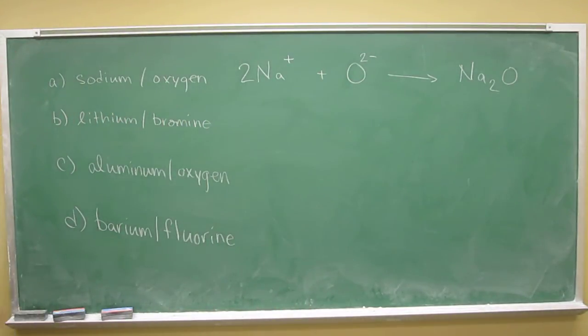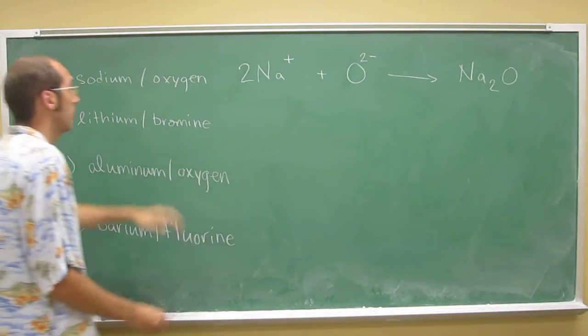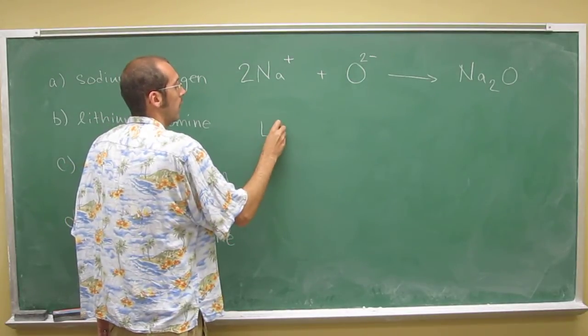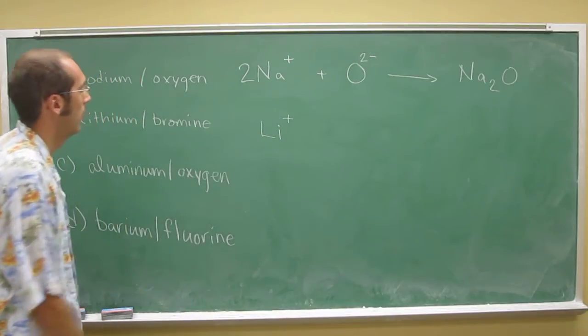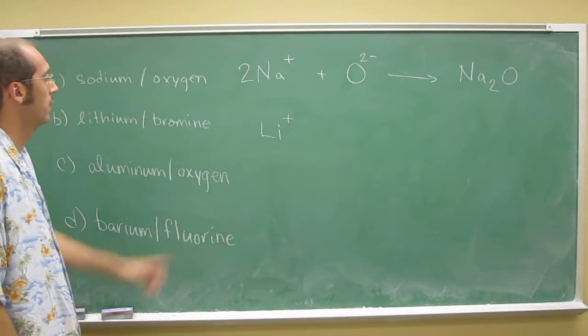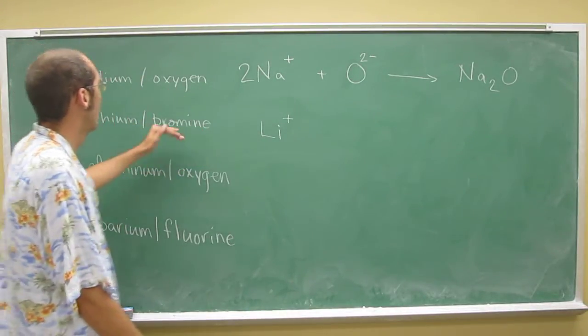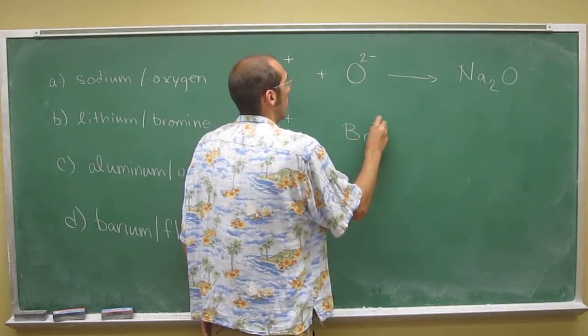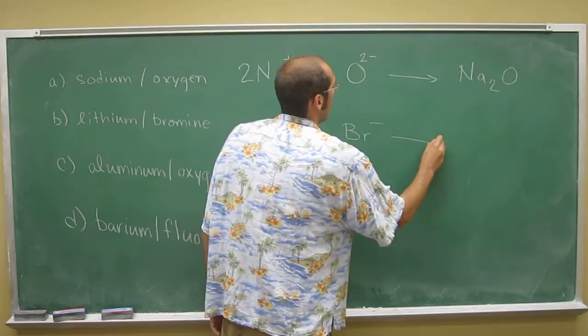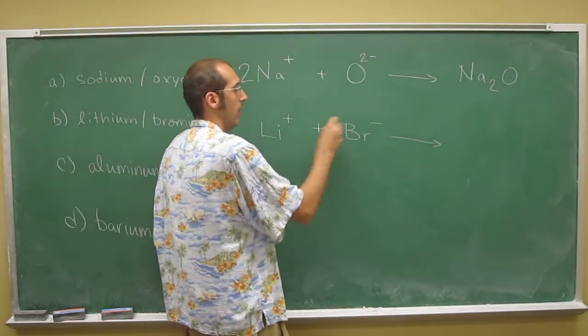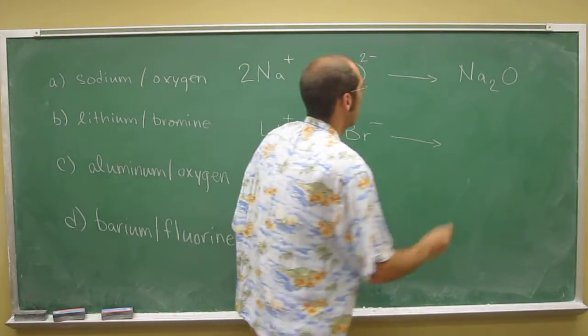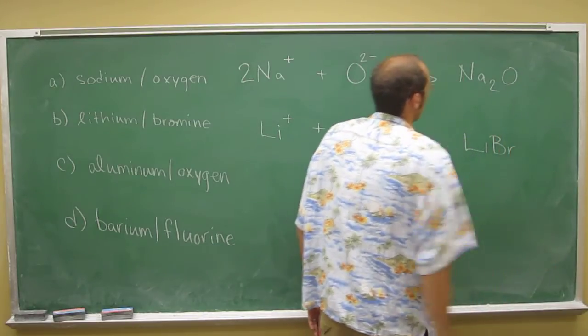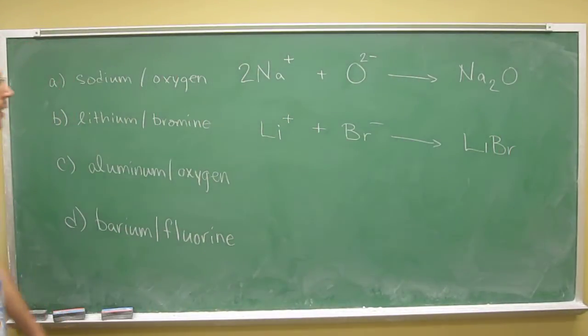So let's do the same thing with lithium and bromine. Lithium is also a group 1 element, so Li is the atomic symbol, group 1 is plus 1. Bromine is a halogen, so group 17, so it's going to have a minus 1. Plus 1 and minus 1 add up to 0. So the formula unit for this one is lithium and bromine, just LiBr.